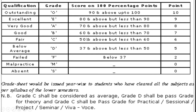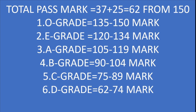For practical, sessional, project, and seminar, C grade is pass — C grade means 50 and above up to 59. So in internal, 25 marks is pass; in semester exams, 37 marks is pass. Total pass mark is 37 plus 25, which equals 62 out of 150. If you score 62 from 150, your paper will be clear.